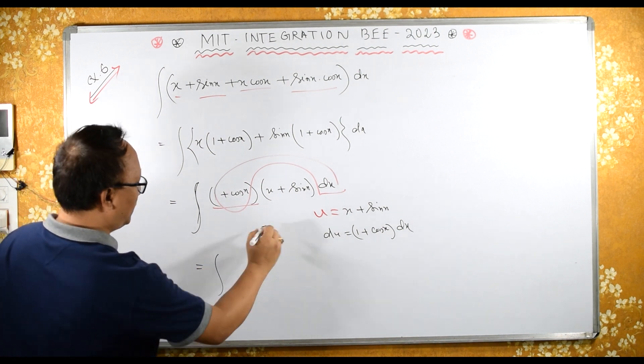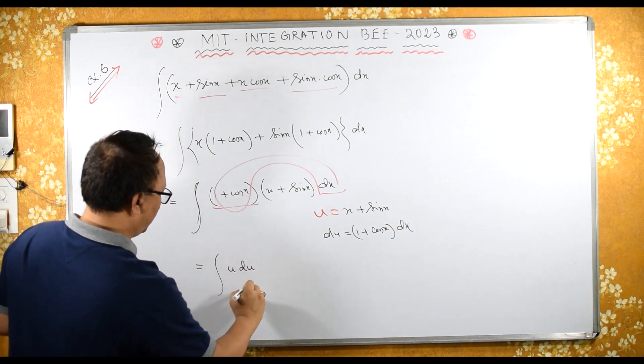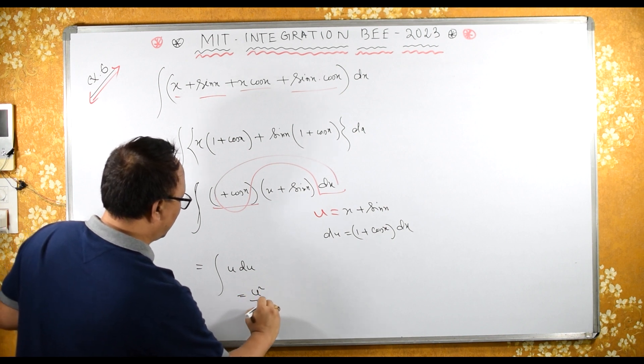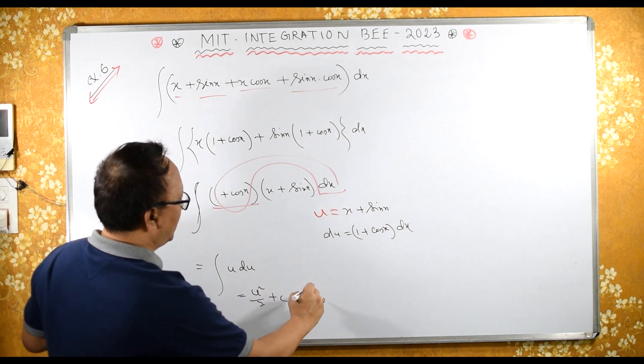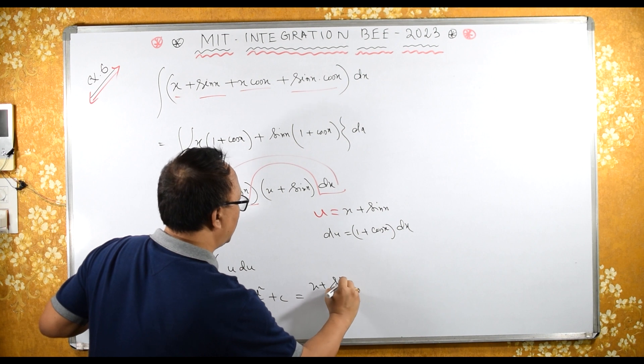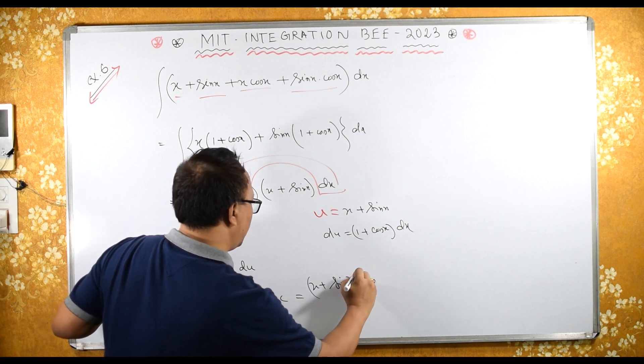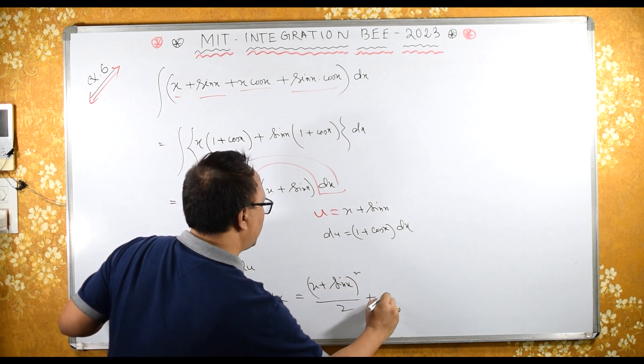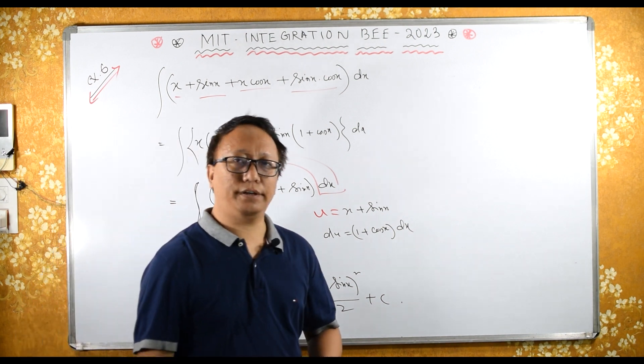Therefore this integral becomes what? u into du, that is u square upon 2 plus c. What is u? x plus sin of x square upon 2 plus c. This is the required answer.